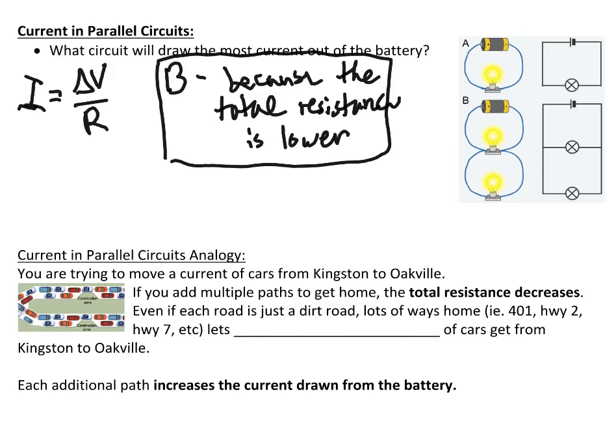Using the highway analogy again: we're trying to move a current of cars from Kingston to Oakville. As you add more paths to get home — even if they're lousy dirt roads with tons of resistance — it's still another way to get there. So if you have the 401, Highway 2, and maybe Highway 7 further north, that lets more current of cars get from Kingston to Oakville. Every additional path, even though it has a resistor on it, increases the current drawn from the battery.